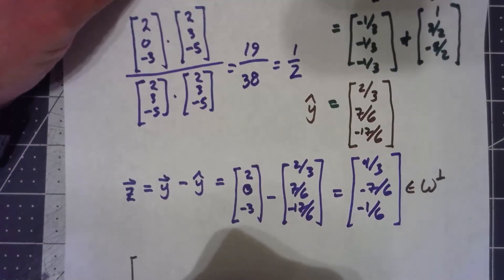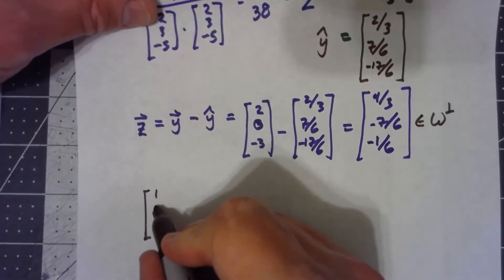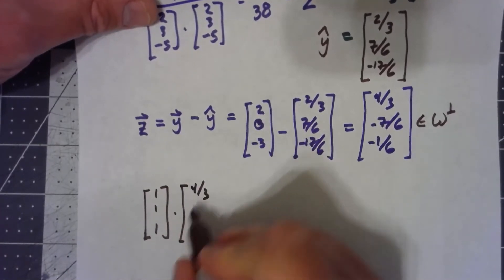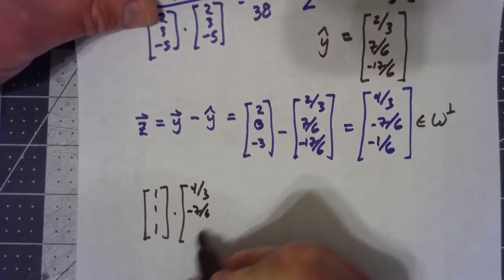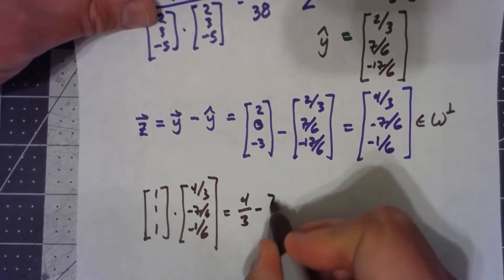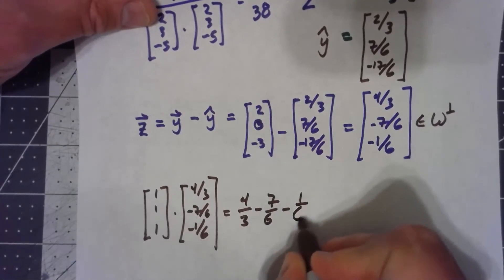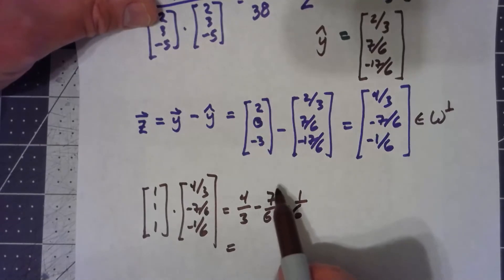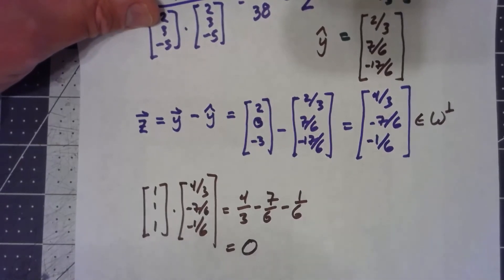So, if I take my (1, 1, 1) dotted with the (4/3, -7/6, -1/6), I get 4/3 minus 7/6 minus 1/6. 8/6 minus 7/6 minus 1/6 is zero.